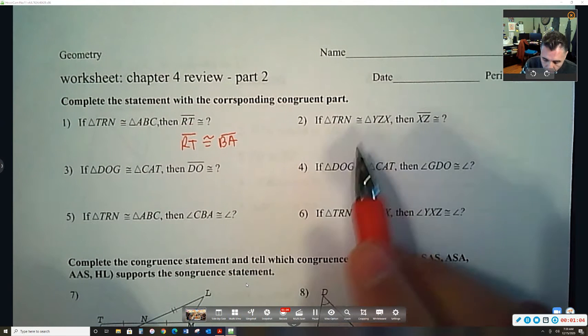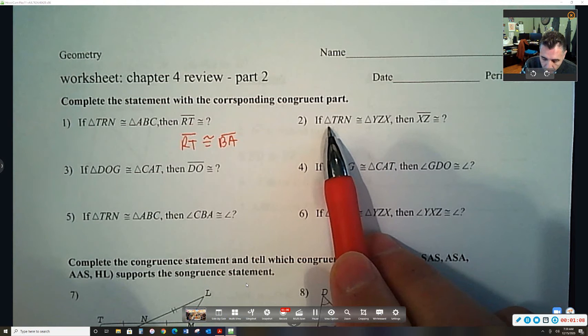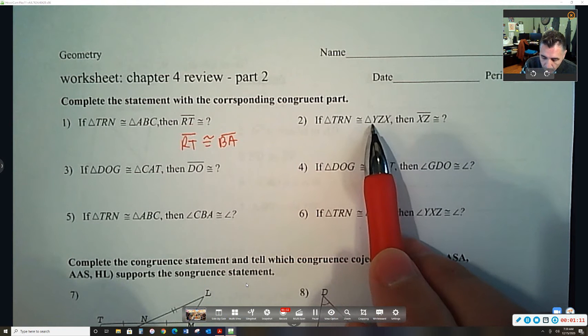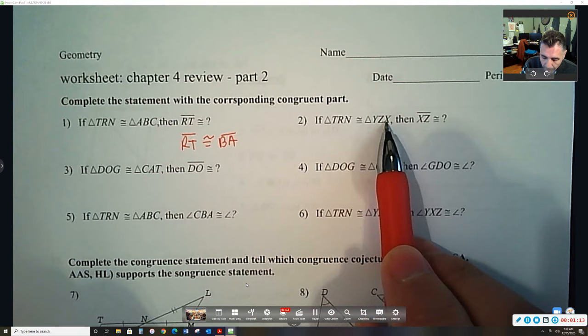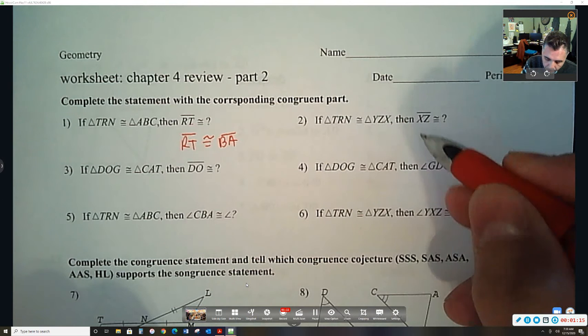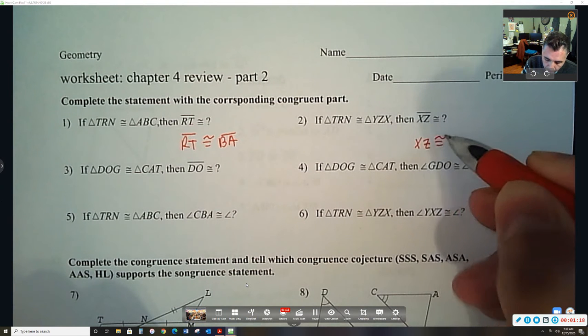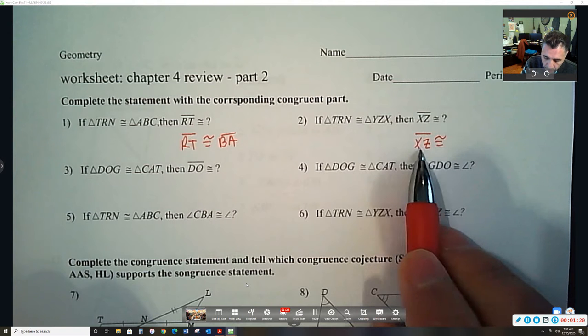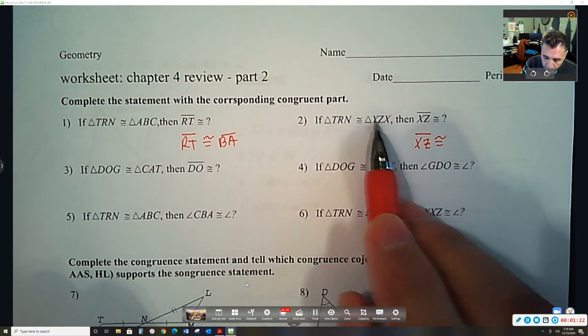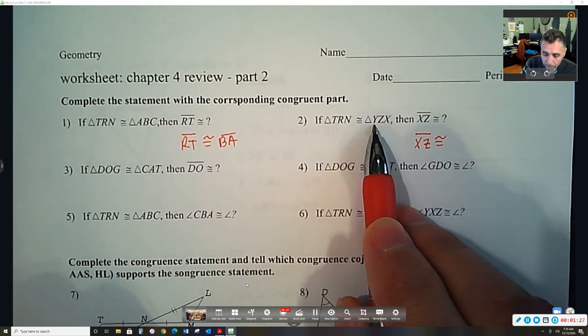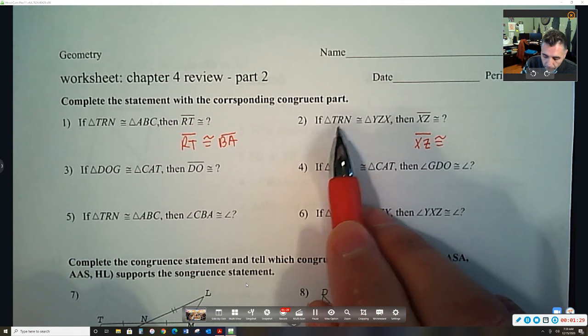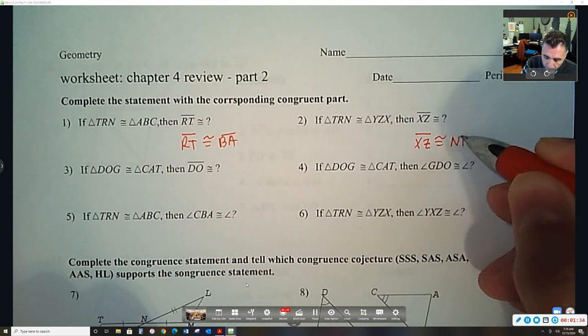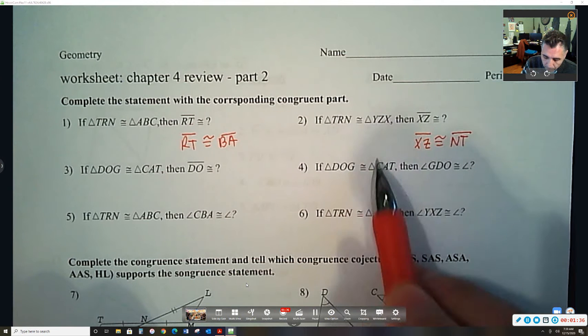Okay, so let's move on to the next one. Here we have another congruent statement. Triangle TRN is congruent to triangle YZX. And then again, you want to figure out which side is congruent to XZ. So here's XZ. We go from the third letter to the first letter in the second triangle. So come over here to the first triangle, take the third letter and go to the first letter. So that should be NT, right?